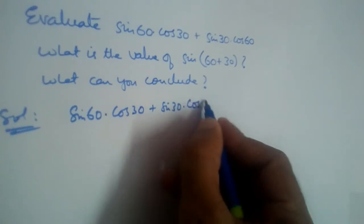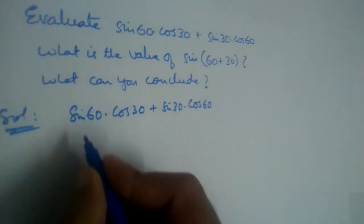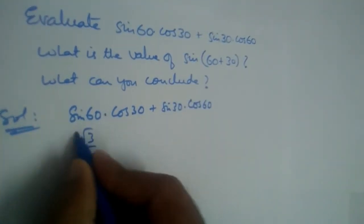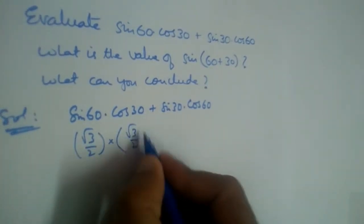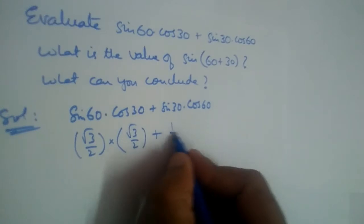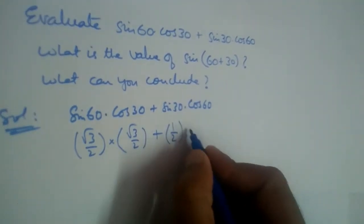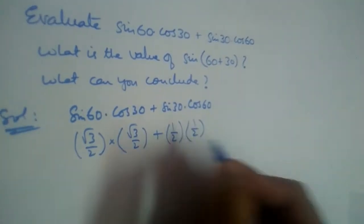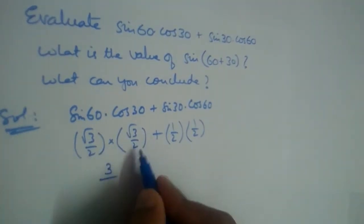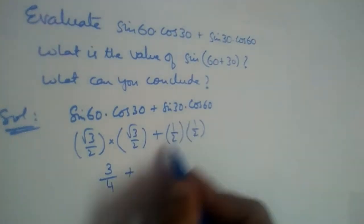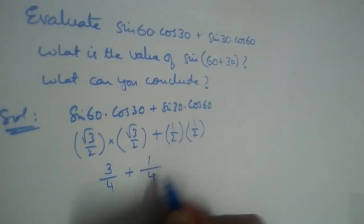What is the value of this? Sin 60 is root 3 by 2 multiplied by cos 30, which is also root 3 by 2, plus sin 30 which is 1 by 2, times cos 60 which is 1 by 2. Let us multiply: root 3 times root 3 is 3, 2 times 2 is 4, plus 1 times 1 is 1, 2 times 2 is 4.